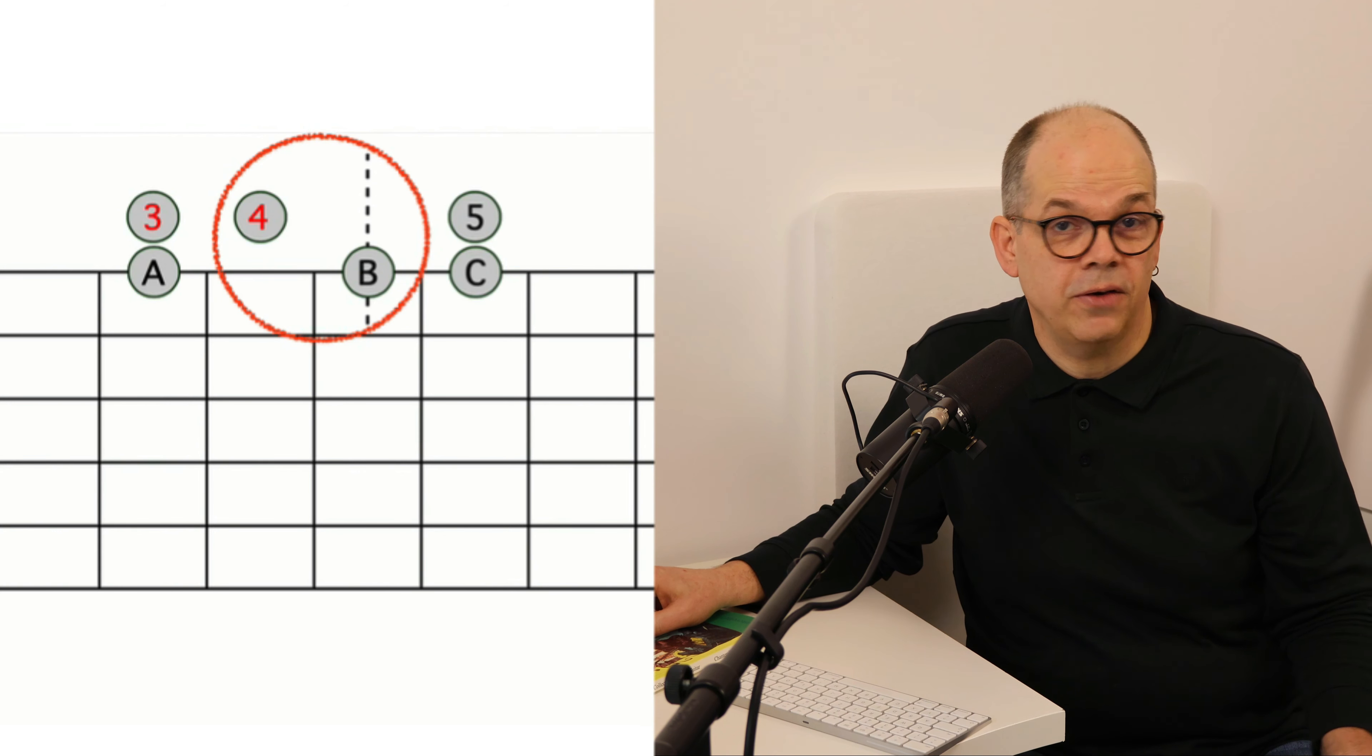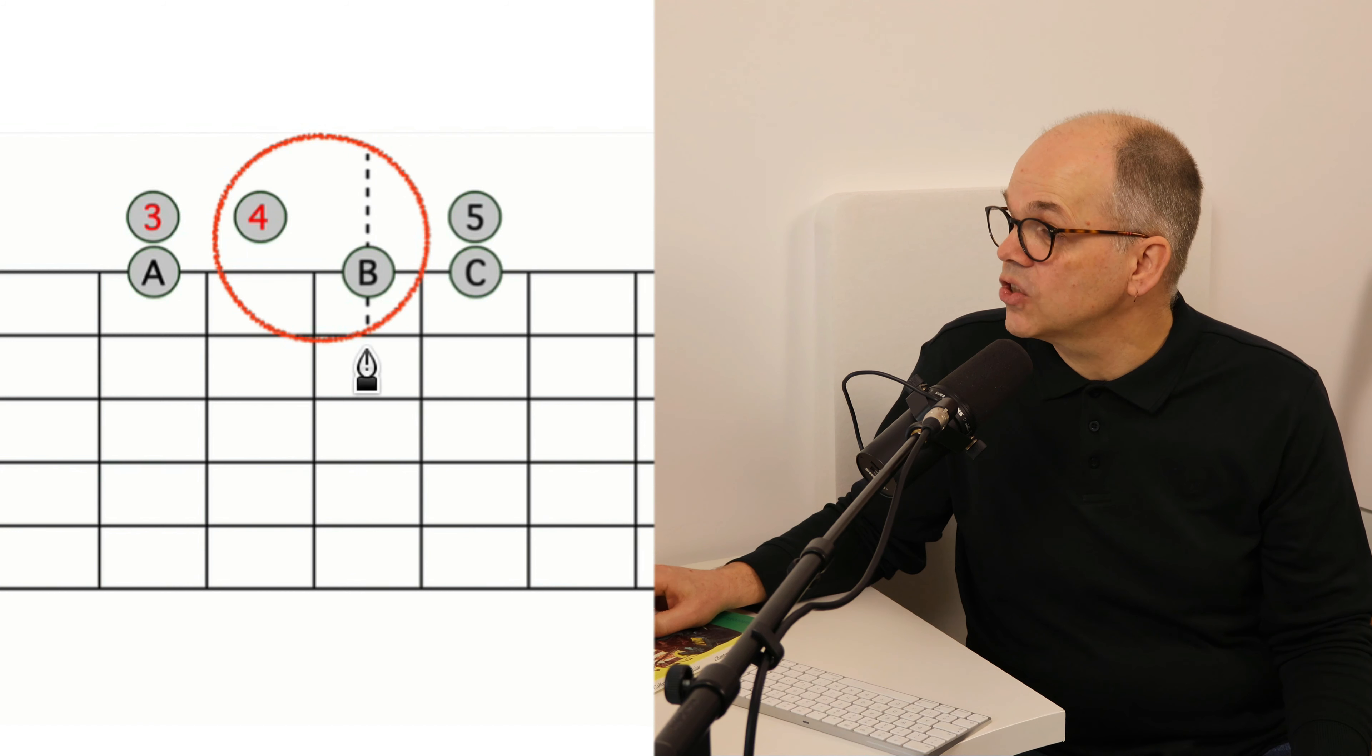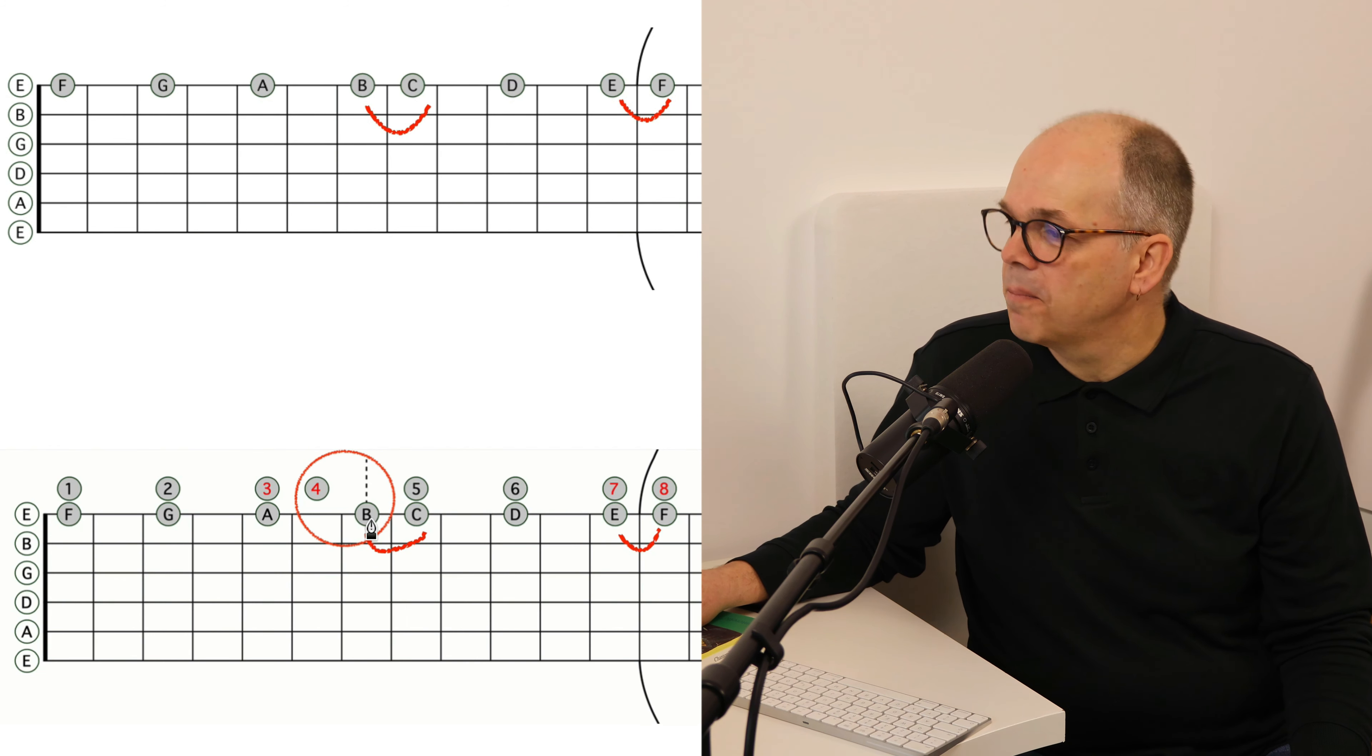8 with the half steps 3, 4, 7, 8. But actually our half steps are E, F, B and C. And the B is in the wrong place.